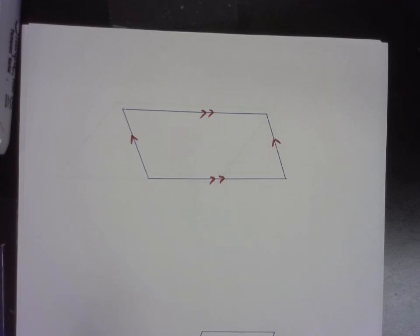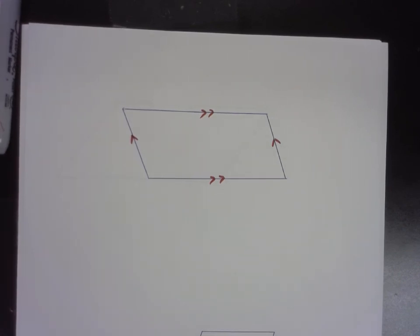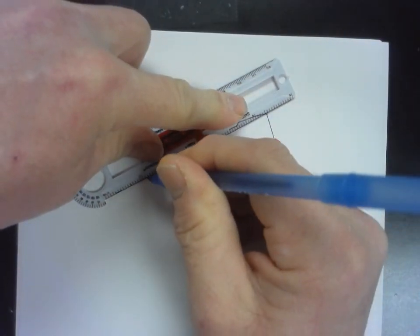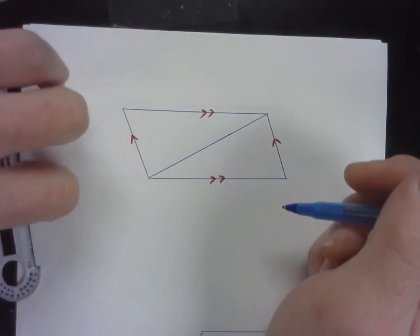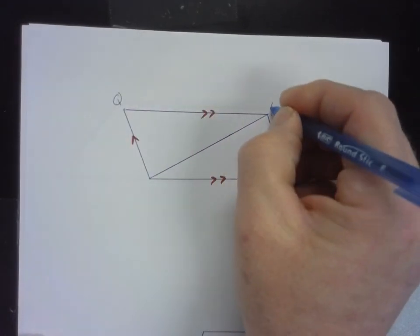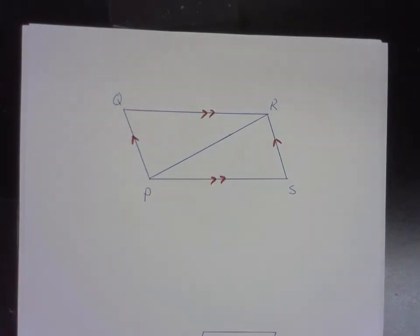If it's a parallelogram — a quadrilateral with both pairs of opposite sides parallel — what else can we know about it for sure? I want to propose that we can show the opposite sides are the same length, are congruent. Let's draw a diagonal here; sometimes we call this an auxiliary segment that helps us with our proof. Check out those two triangles.